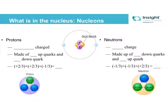So 'nucleon' is a new vocab term here. That is the universal name for protons and neutrons — they are both types of nucleons. Let's use our memories, look over the pictures given to us here, and see if we can fill in these blanks.